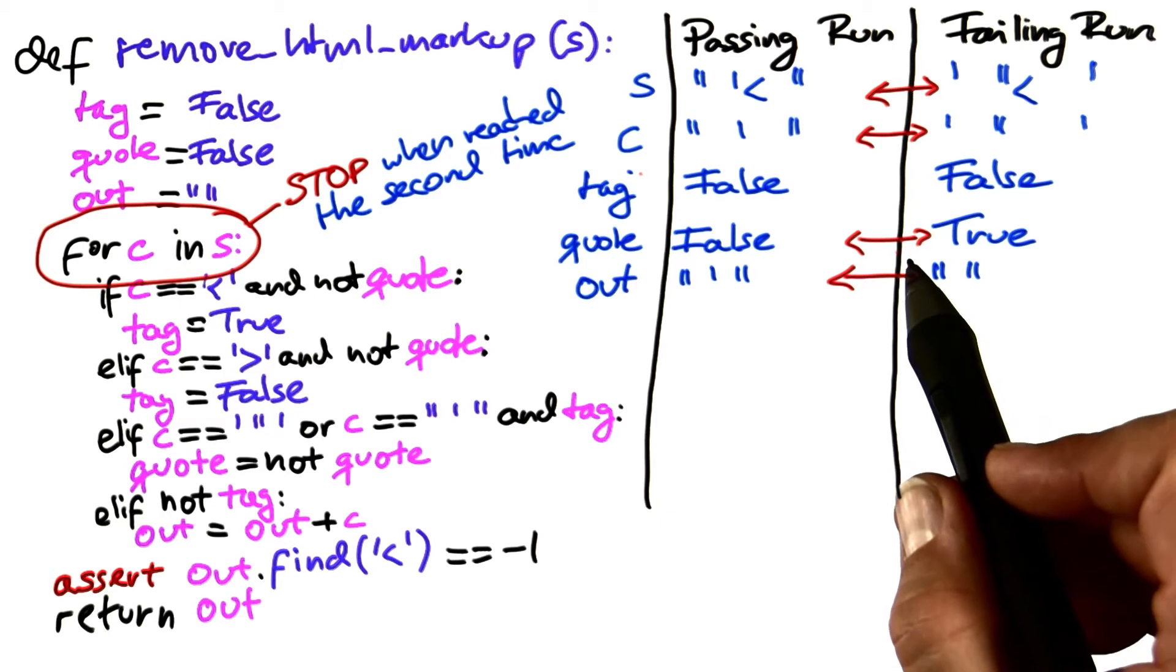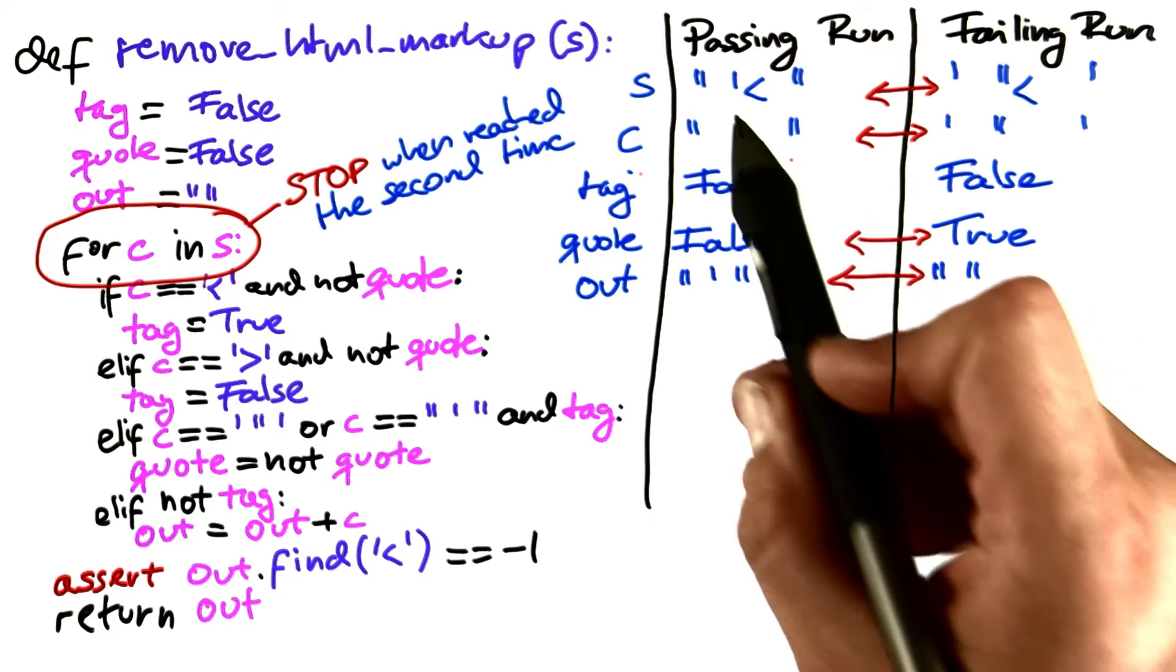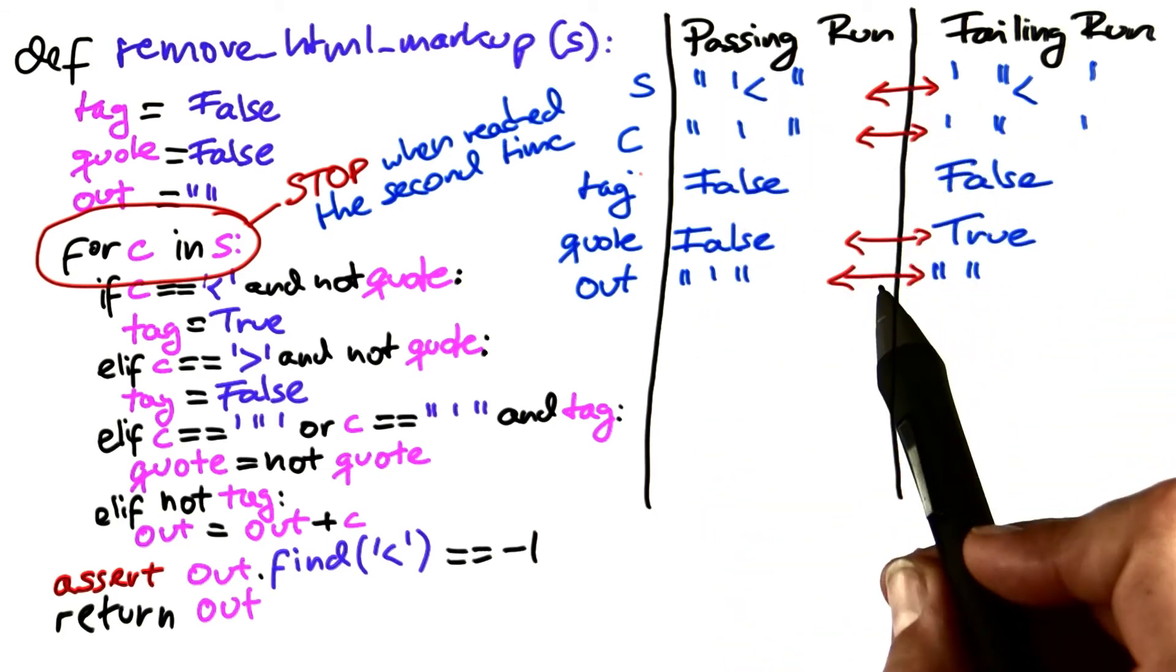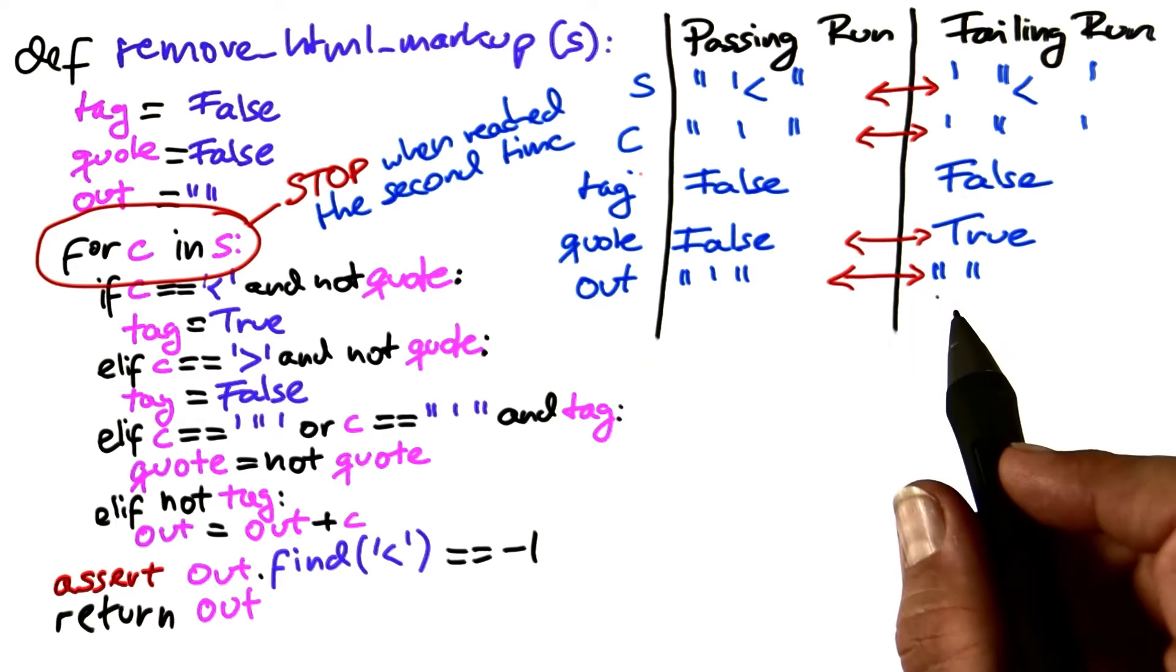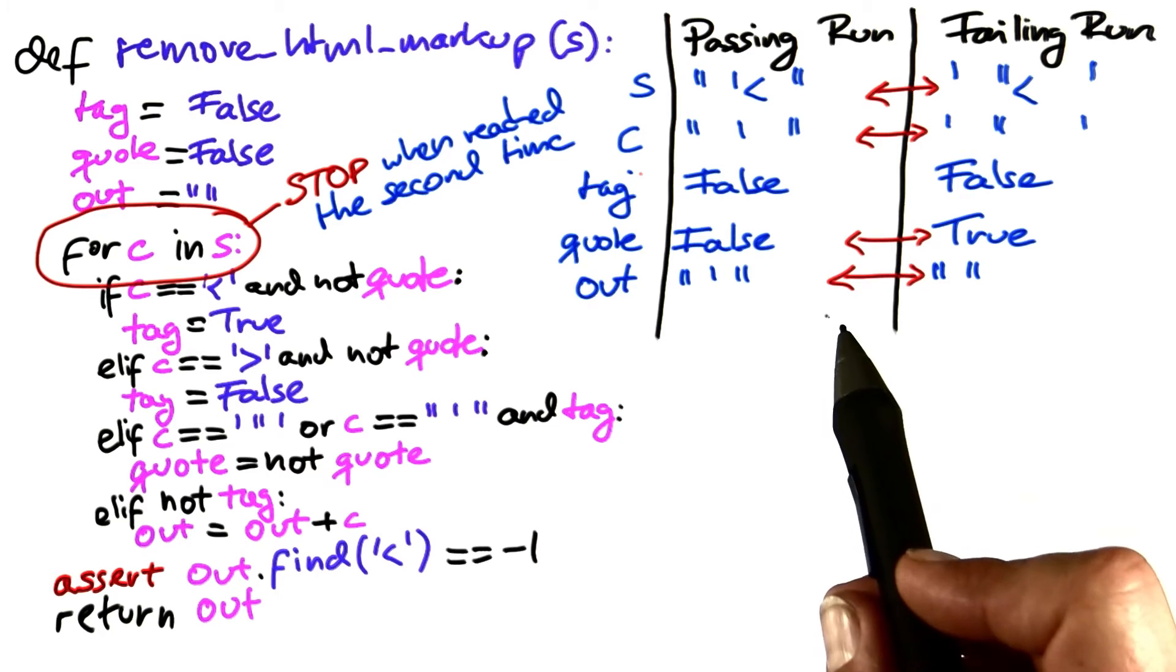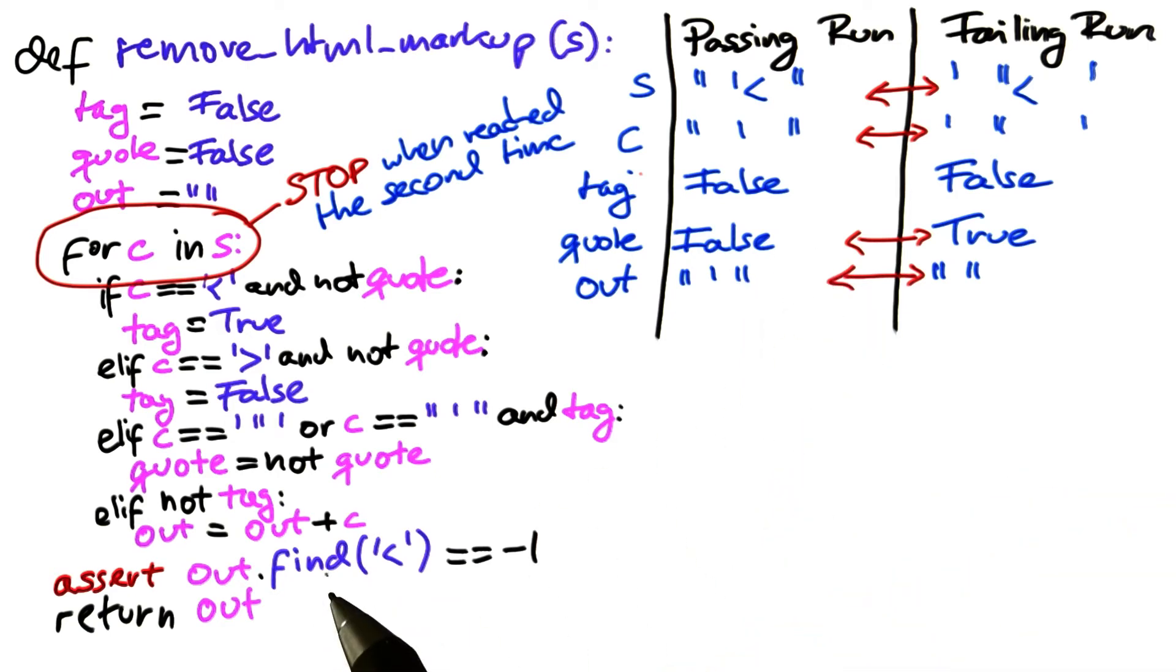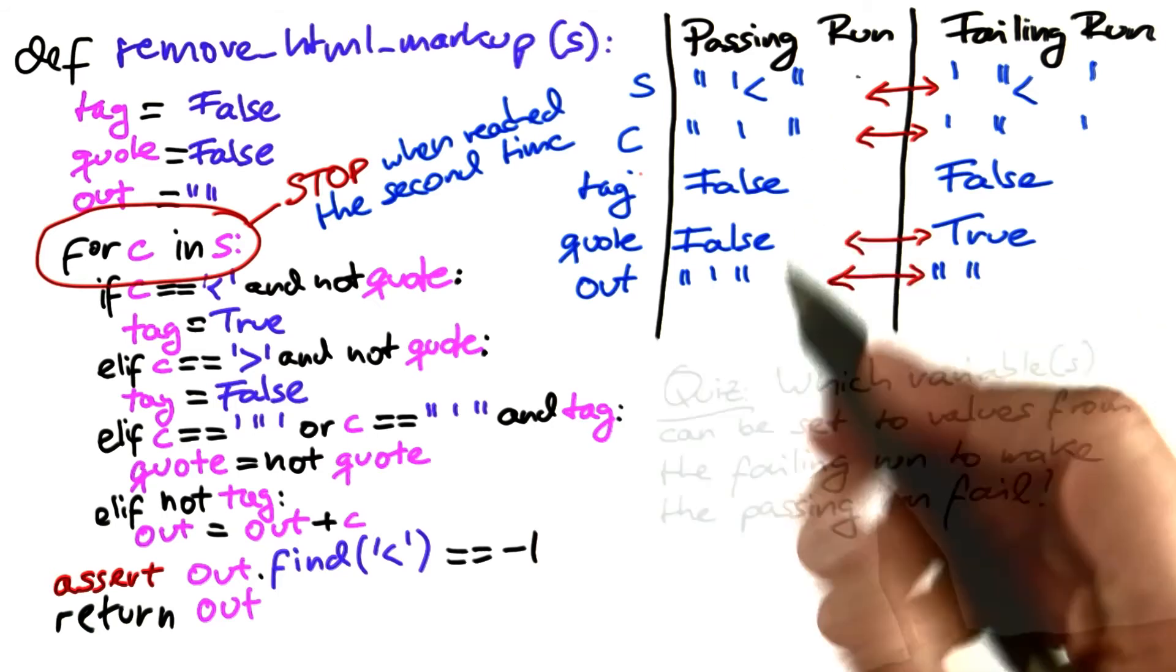You can now imagine that if we were in the passing run and we would set these four variables to the values found in the failing run, then we would effectively make the passing run a failing run, meaning that these four variables which differ make up a cause for the failure. However, it suffices to set only a subset of these variables to the values found in the failing run. Only a subset of these variables need to be changed in order to cause the assertion to fail, and therefore the entire run to fail.